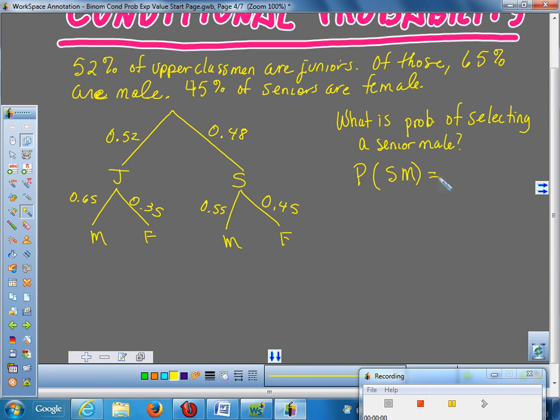Since it's and, you just multiply the senior probability, which is 48%, times the male probability, which is 55%. That equals 0.264. So, there would be a 26.4% chance that you would get a senior male.